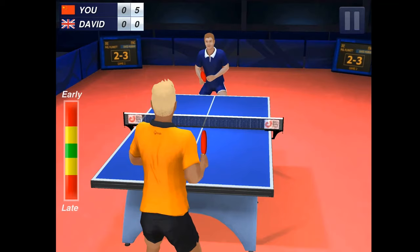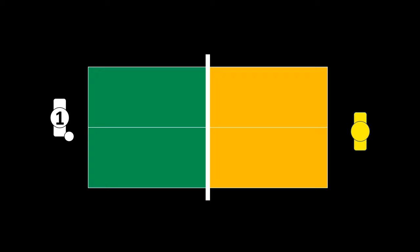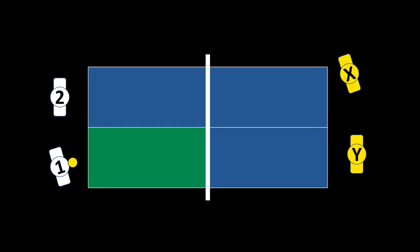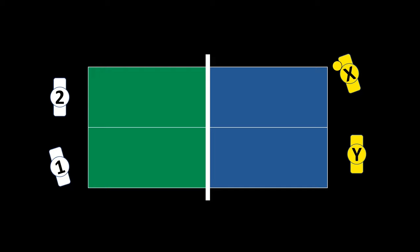In doubles, it's two versus two. The main difference from singles is in the service: in singles your serve can bounce anywhere on your side and then anywhere on the opponent's side. But in doubles, the serve must bounce on the right half of your table and then land on the left half of your opponent's table. After the serve, the receiving player can return anywhere.